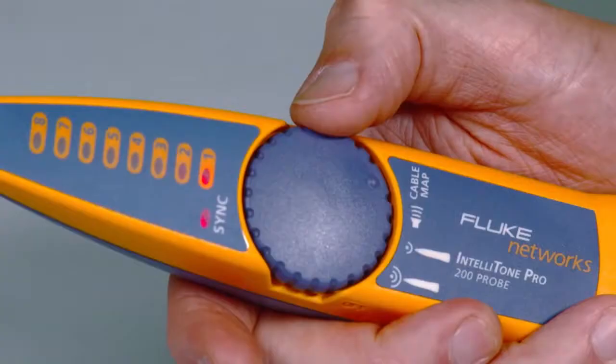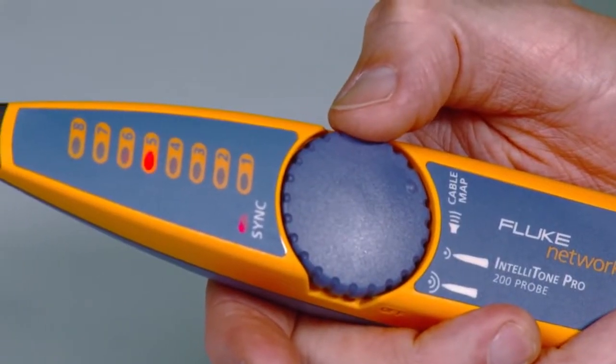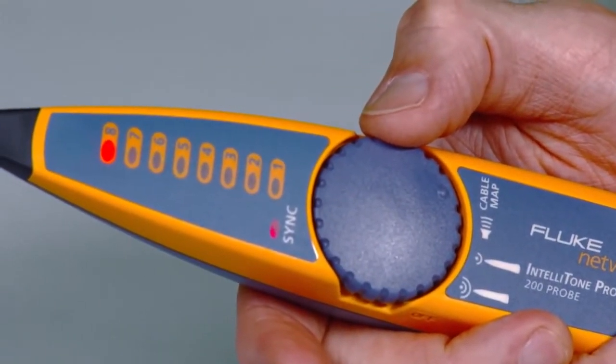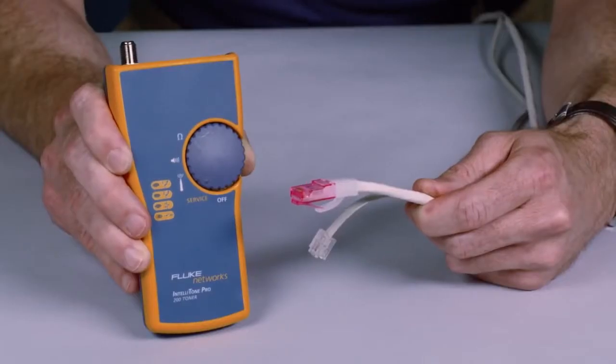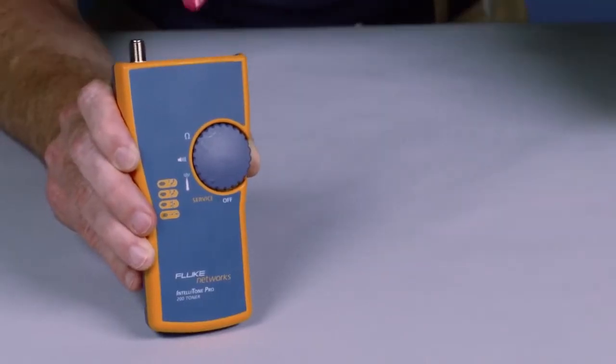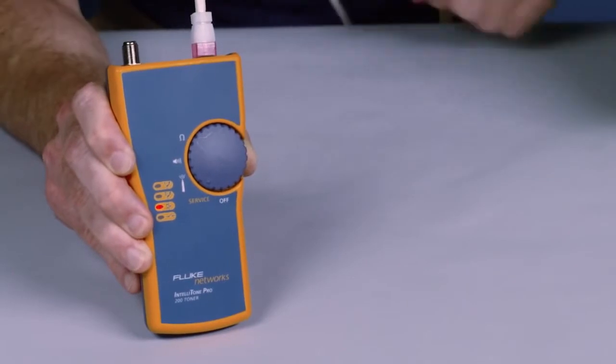The toner and probe feature a thumb wheel ergonomic design and status indicators give easy-to-read feedback. The mystery of identifying cable services becomes history. Know if it's a data, telco, or dead jack instantly.